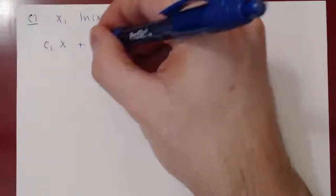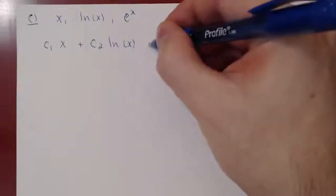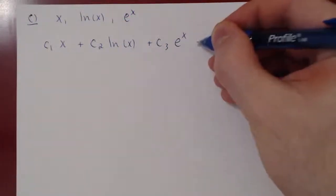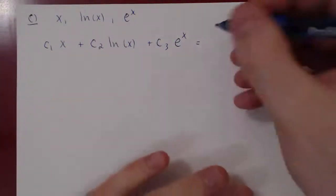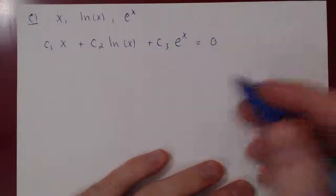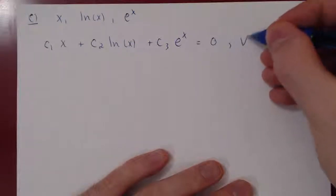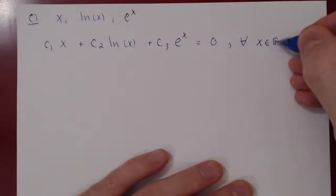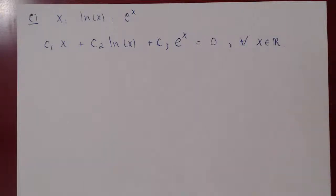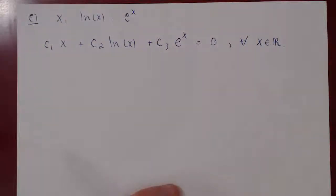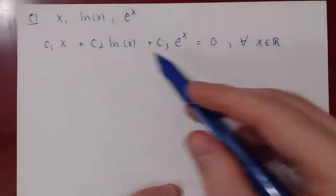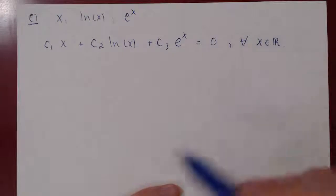As always, we consider a linear combination of our elements equal to the zero vector of our space. Since we have functions living in the vector space of all real functions, the zero vector is the zero function — so this must equal zero for all real values of x. We take advantage of this fact: this equality must be true for any real value of x.